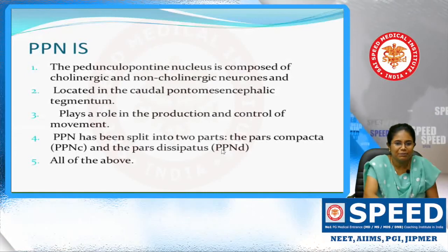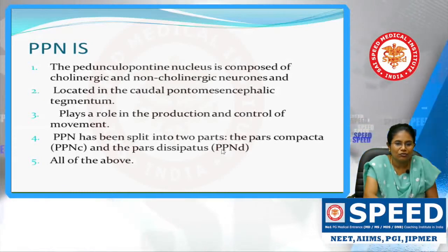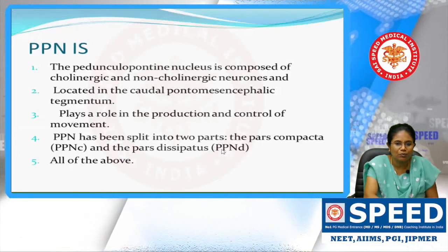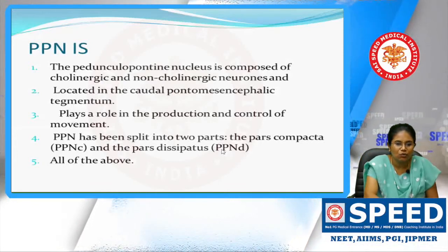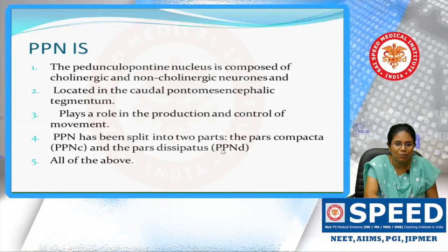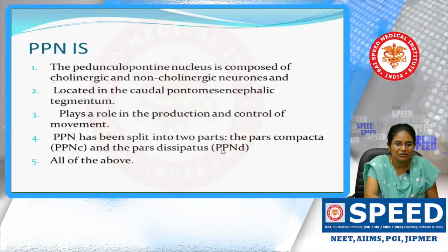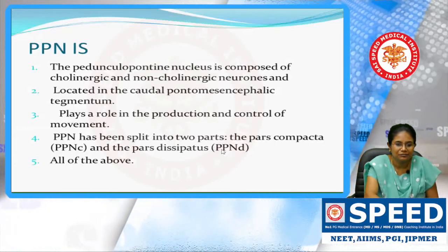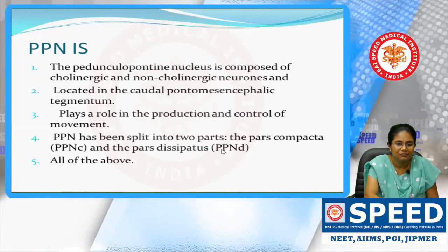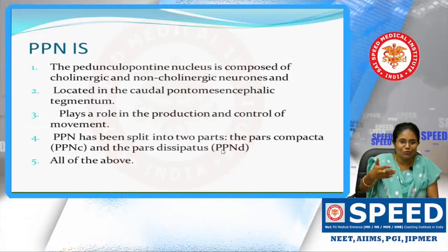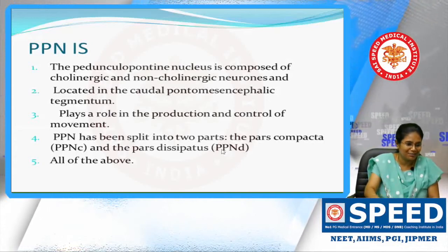What is PPN? PPN is the pedunculopontine nucleus. It is composed of cholinergic and non-cholinergic neurons located in the caudal pontomesencephalic tegmentum. They play a role in the production and control of movement. It has been split into two parts: the pars compacta and the pars dissipatus — all of the above is the correct answer.